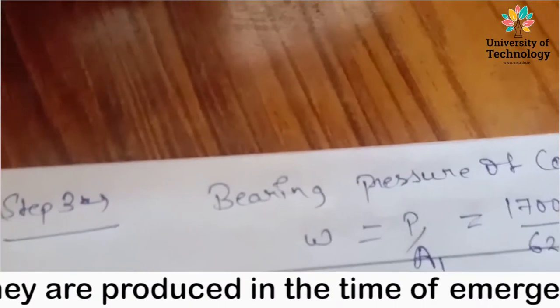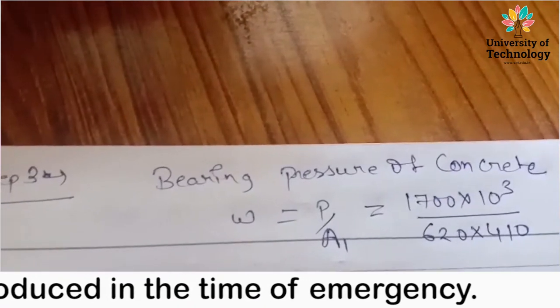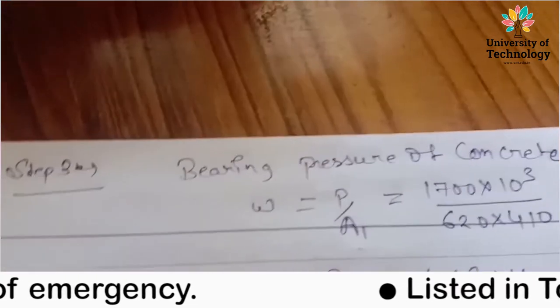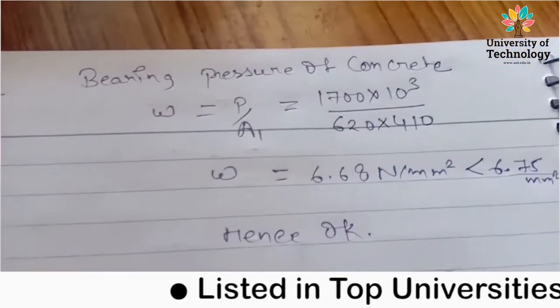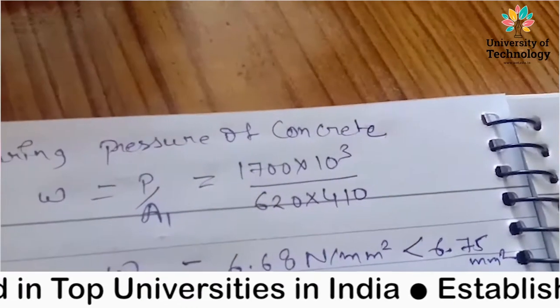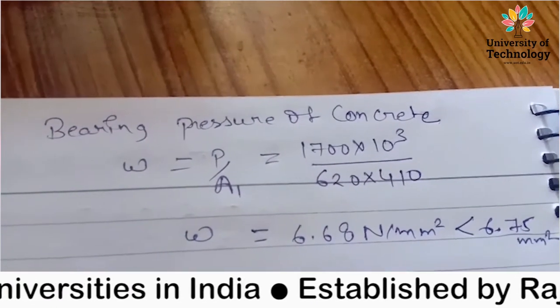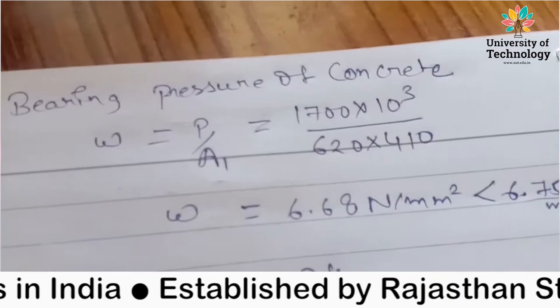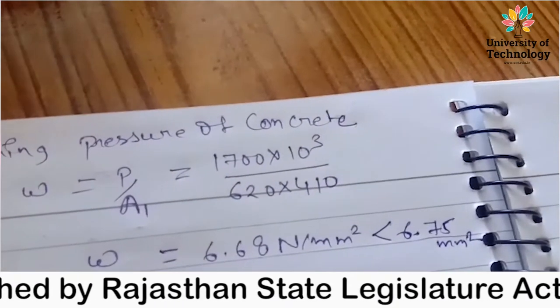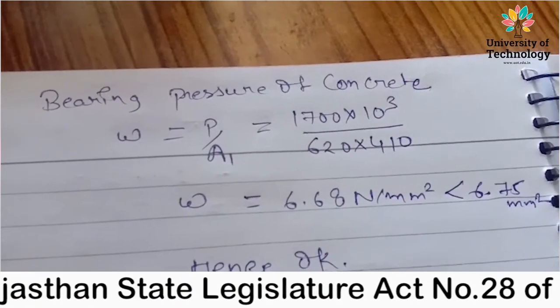Step 6: First we calculate bearing pressure of concrete P upon A1. This is the formula. We have 1700 to 10 power q, A which we have now is 620 into 410. This is our value. This doesn't need to be higher. Bearing pressure on concrete, this is the value.